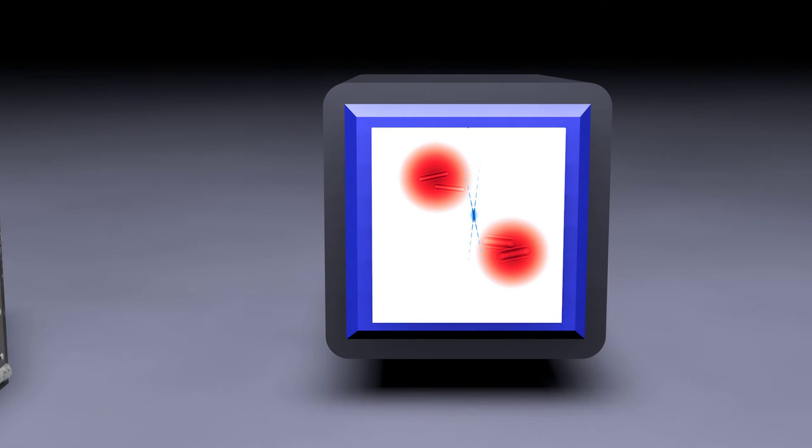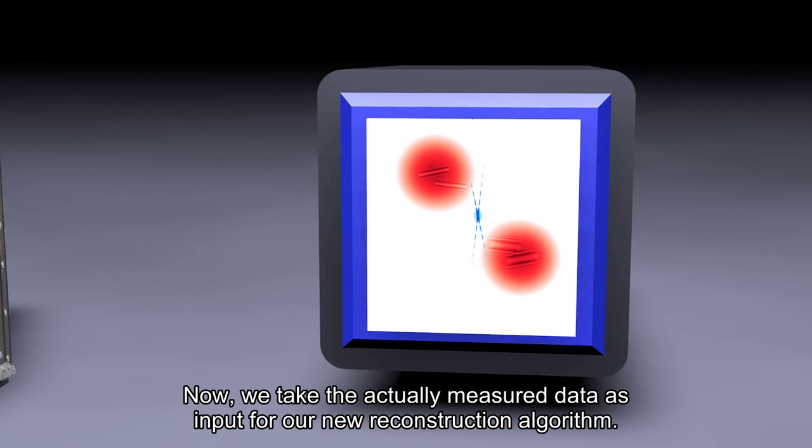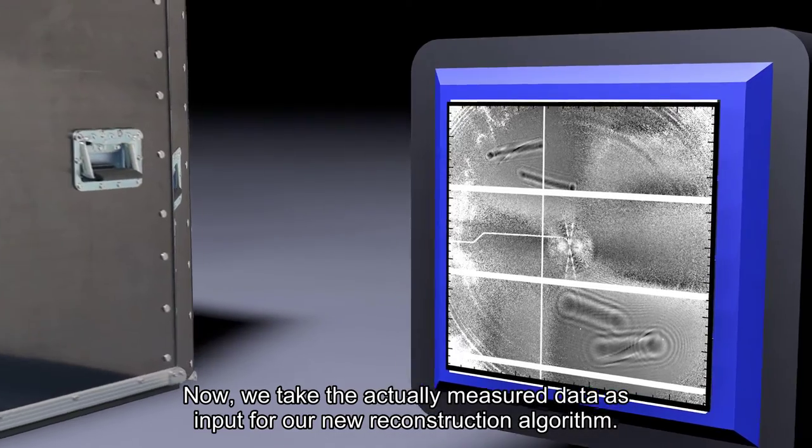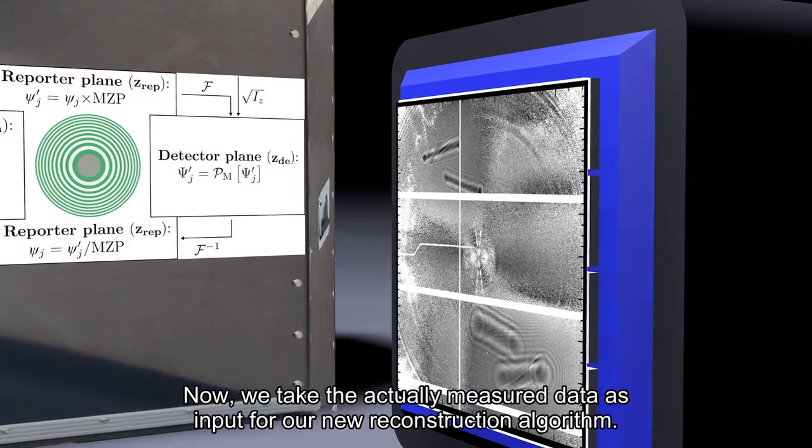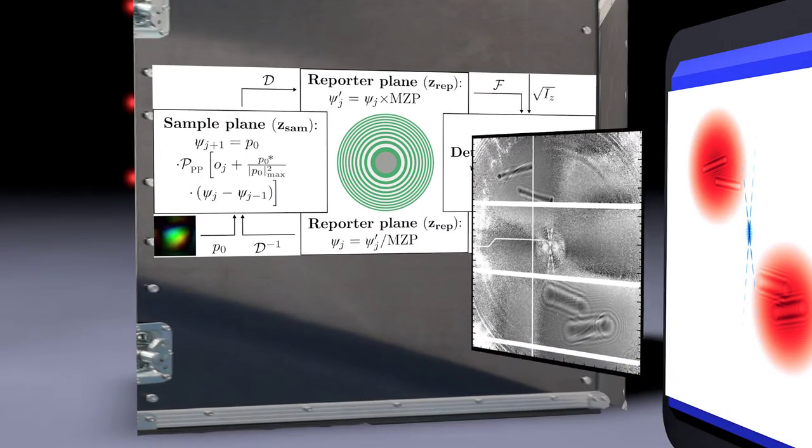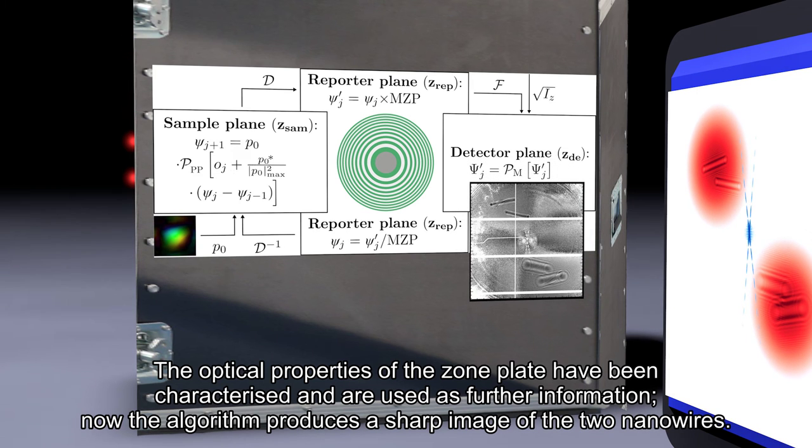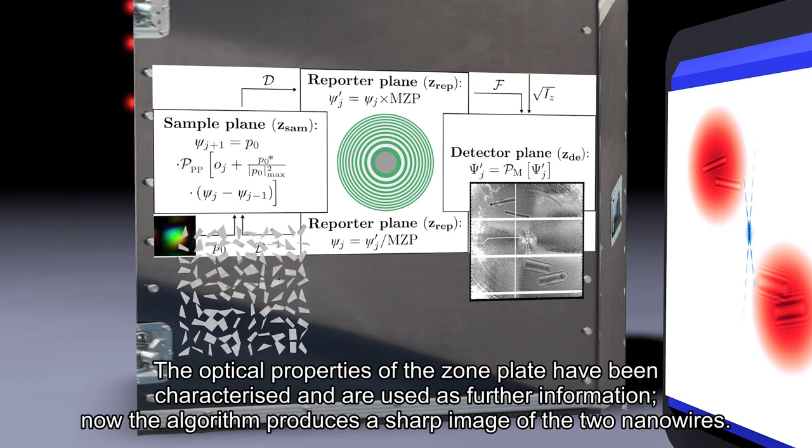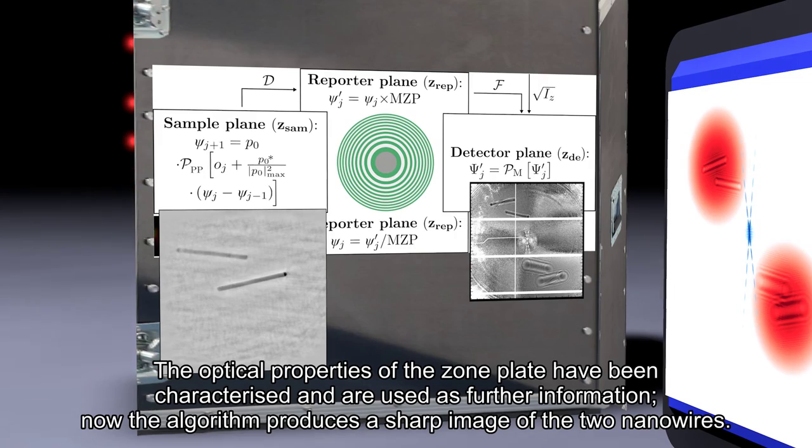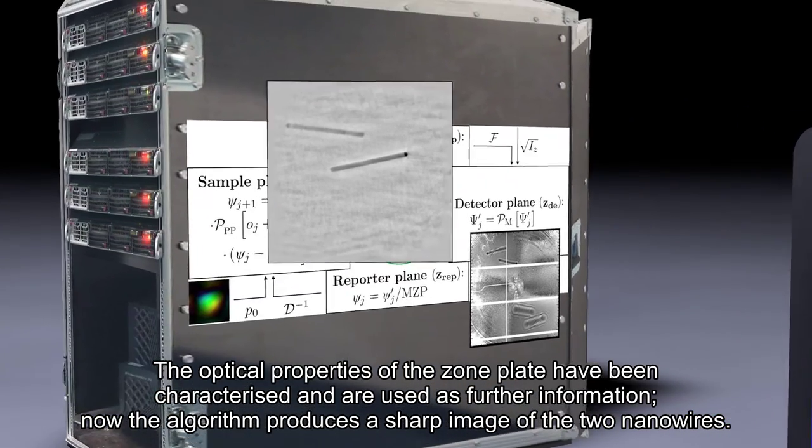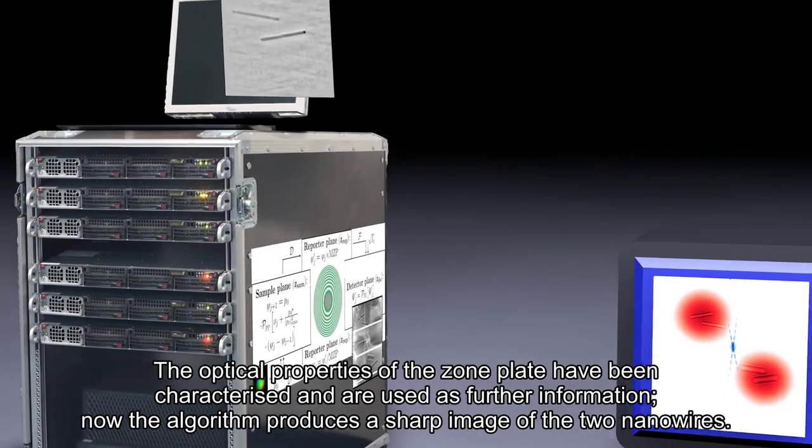Now we take the actually measured data as input for our new reconstruction algorithm. The optical properties of the zone plate have been characterized and are used as further information.